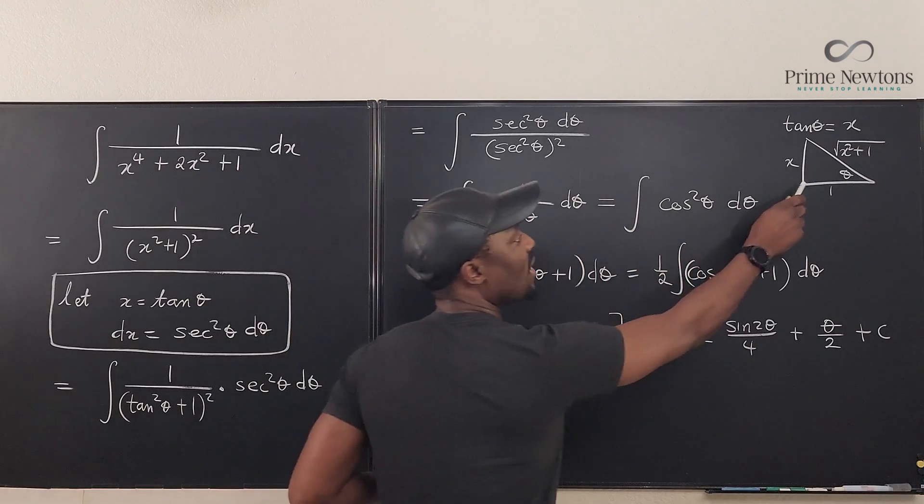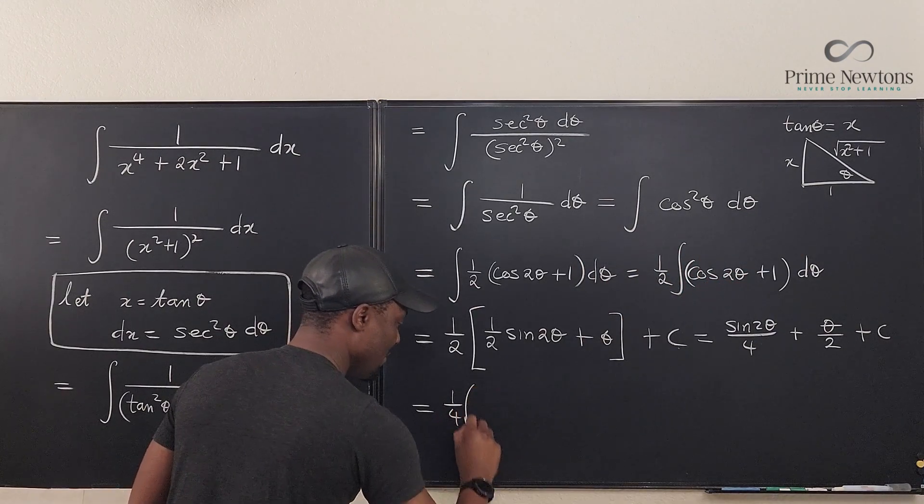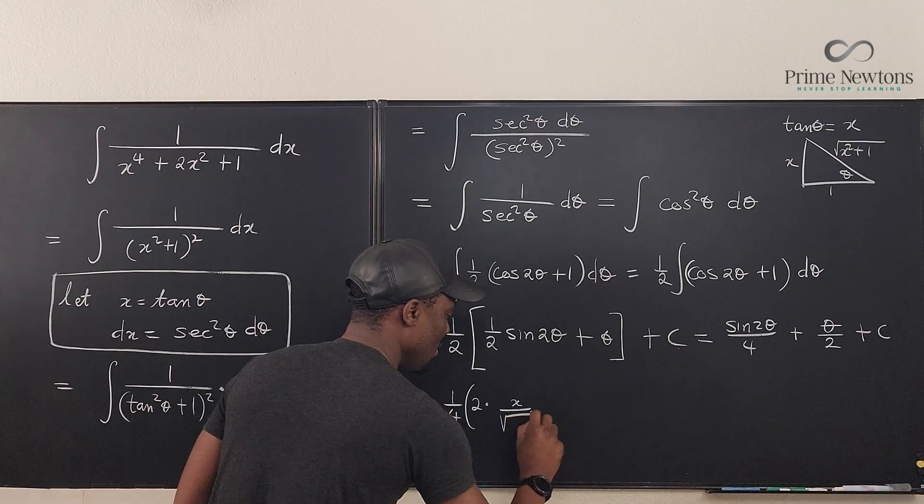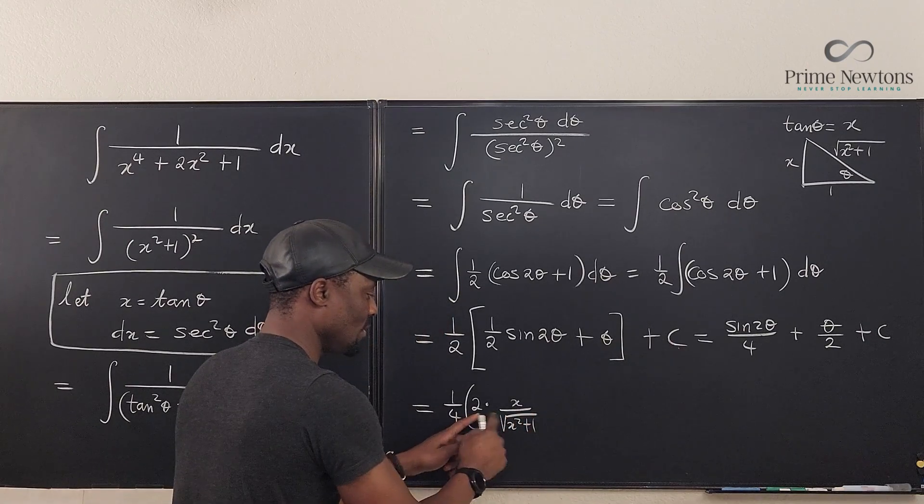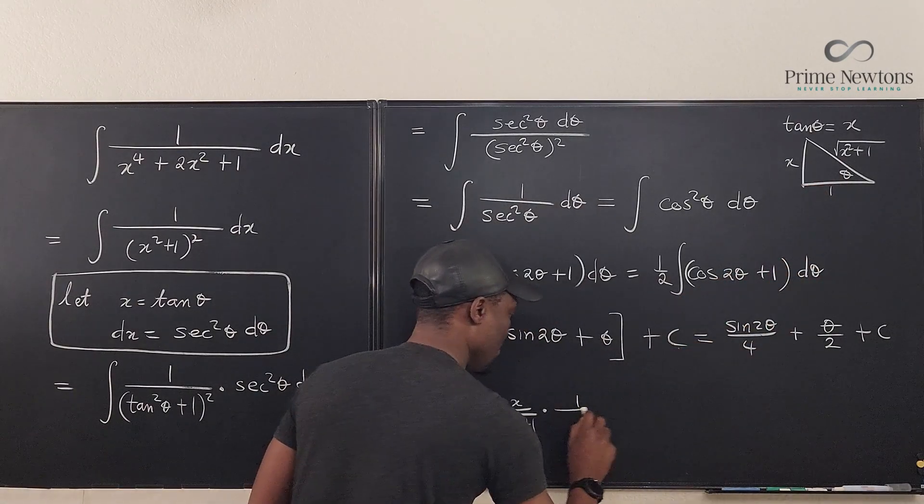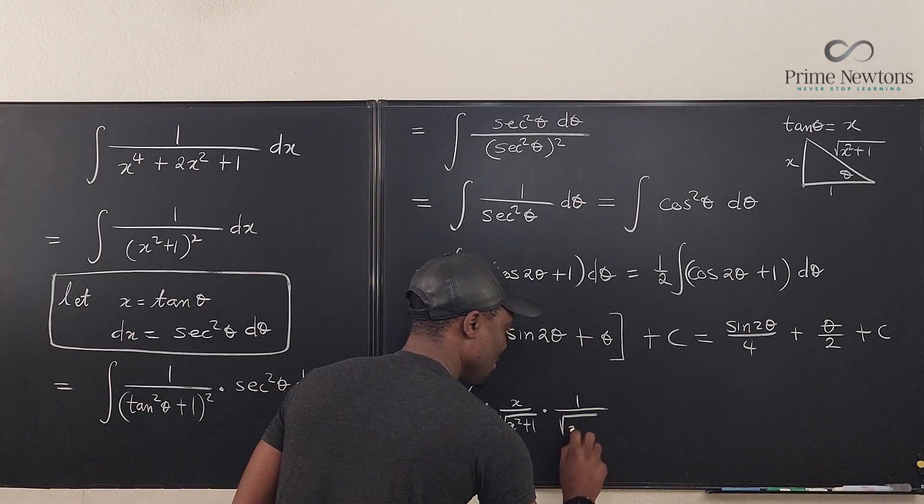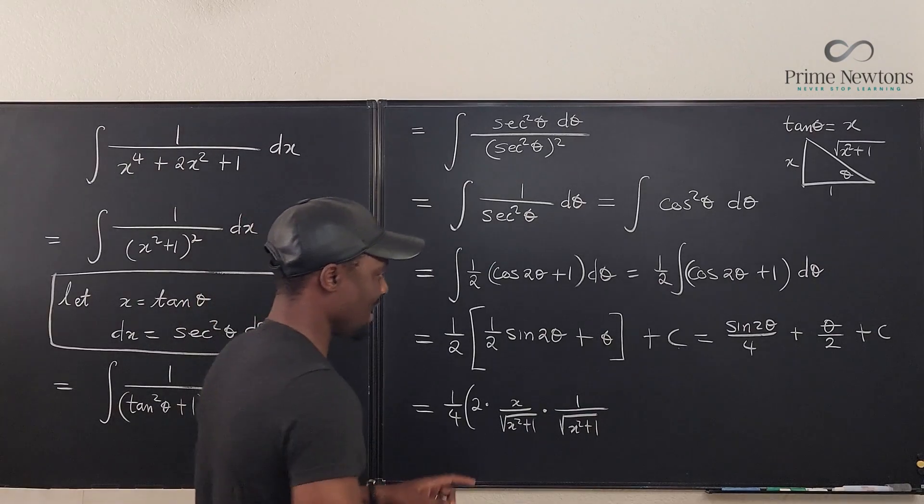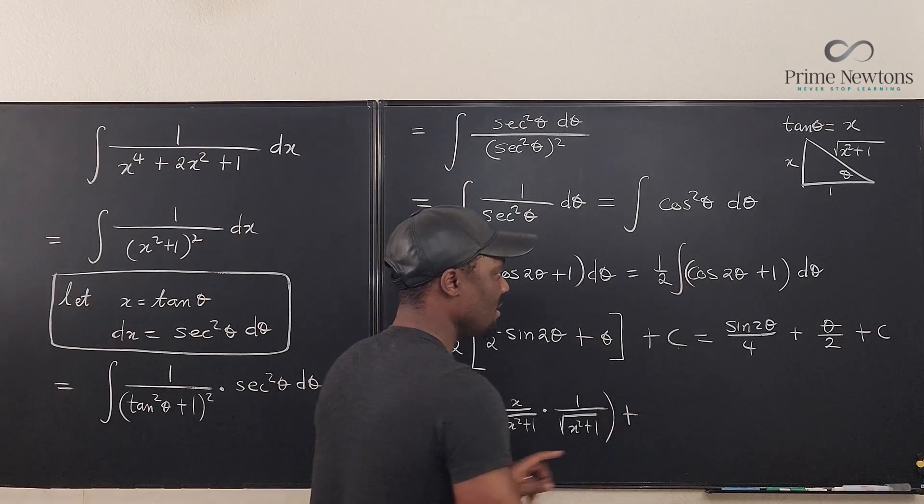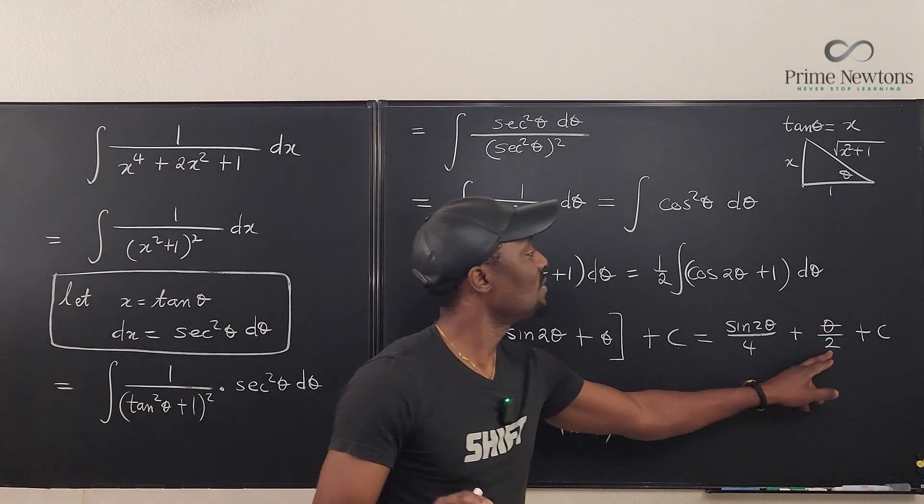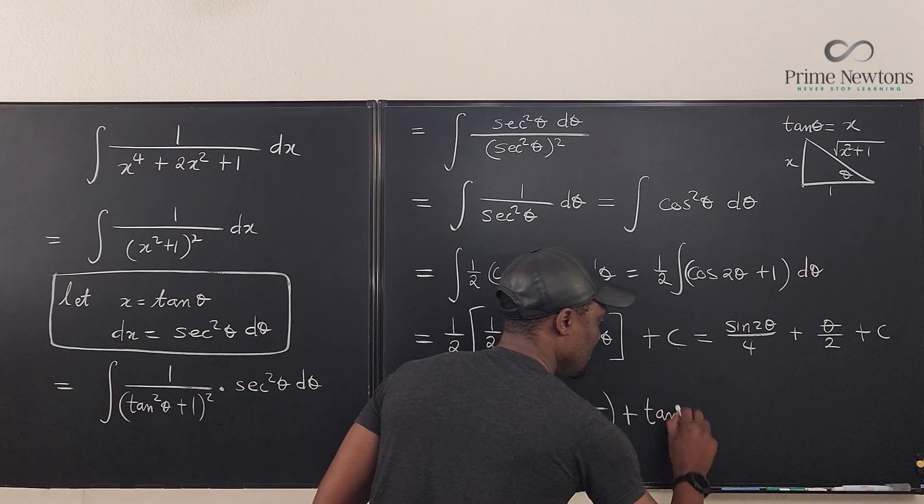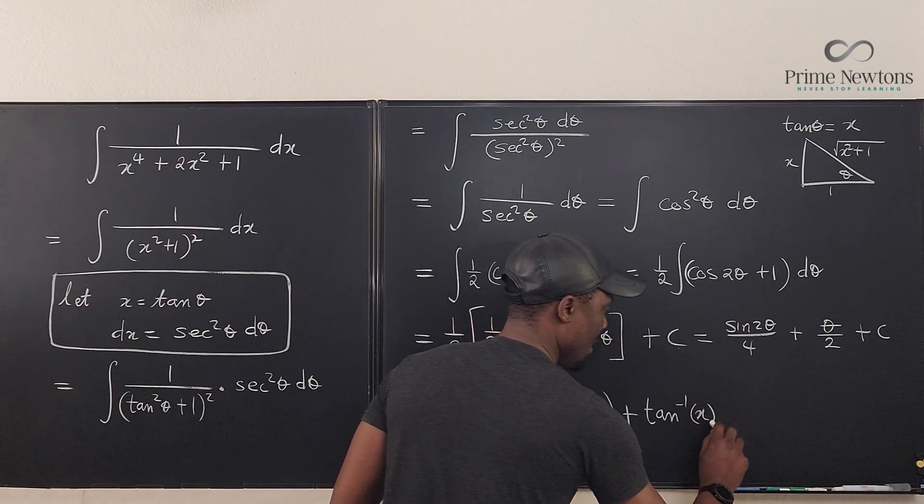Well, what is sin θ from this triangle? 1/4 of 2 times sin θ, which is x over √(x^2 + 1). That is 2 sin θ. Cos θ is going to be adjacent over hypotenuse, which is 1 over √(x^2 + 1). Looking nice. That's 2 sin θ cos θ, 1 over 4. And then we're going to say plus θ/2. What is θ/2? Theta is going to be the arctangent of x, plus arctan x, plus c.